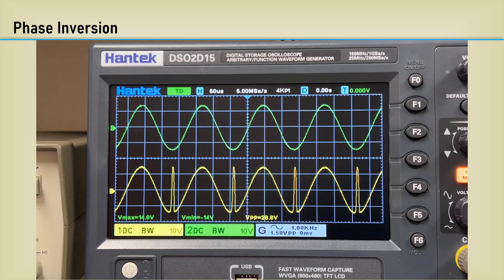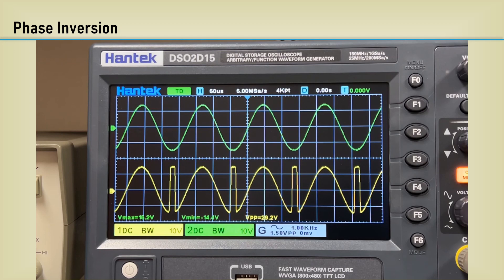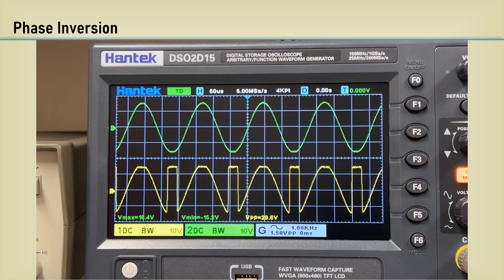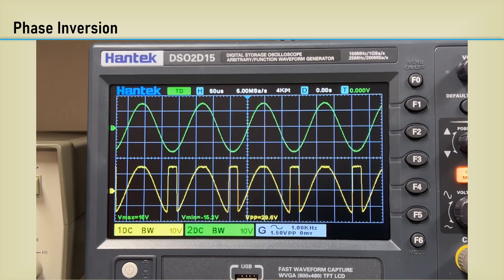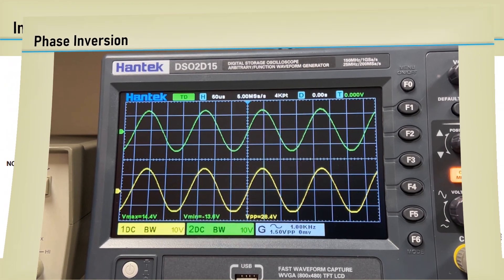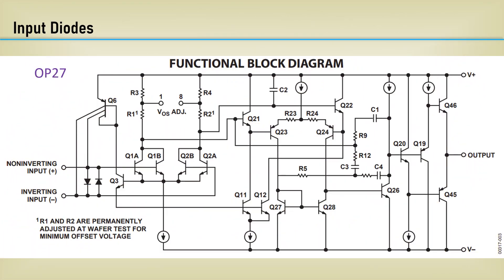Another thing to be aware of when using an op amp as a comparator is the possibility of the dreaded phase reversal condition that happens on some op amps when the common mode input ranges are exceeded. Also beware that some op amps, like the OP27, have a set of anti-parallel diodes across the inputs, therefore limiting the amount of differential input voltage.